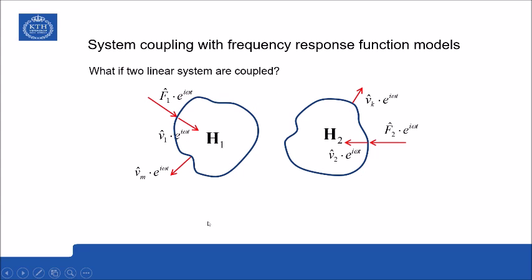Let's start by looking at two isolated systems: system one represented by its passive parameters and frequency response function h1, and system two represented by its passive properties in terms of its frequency response function matrix h2.